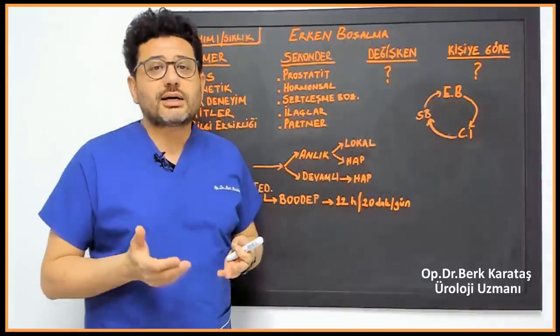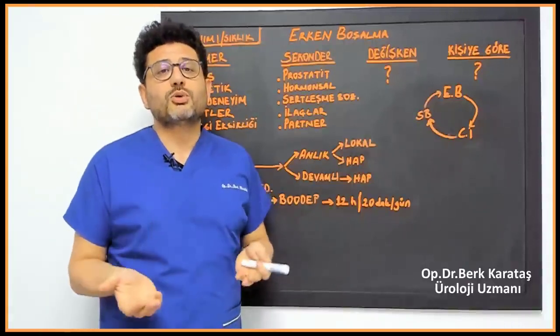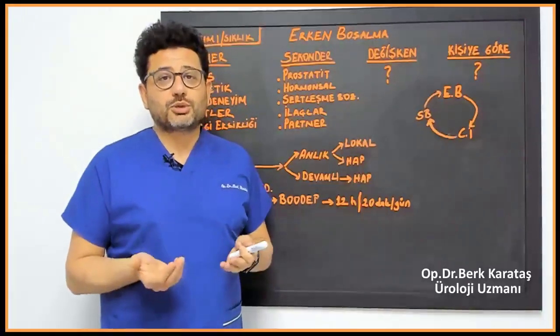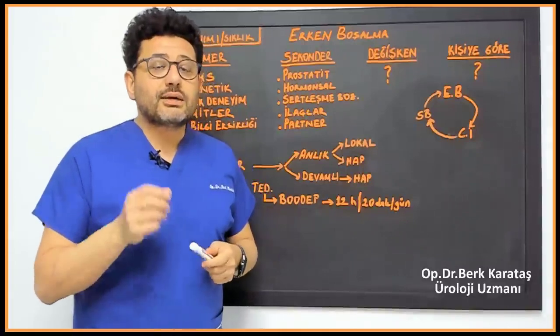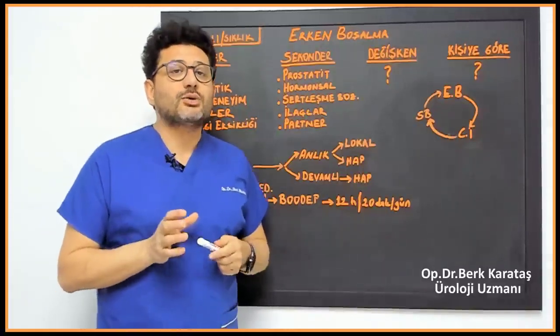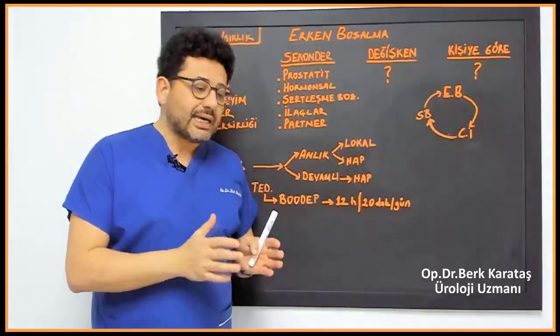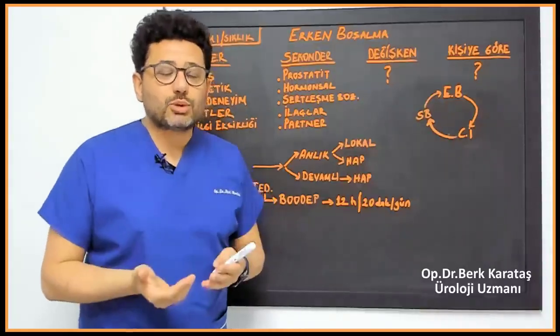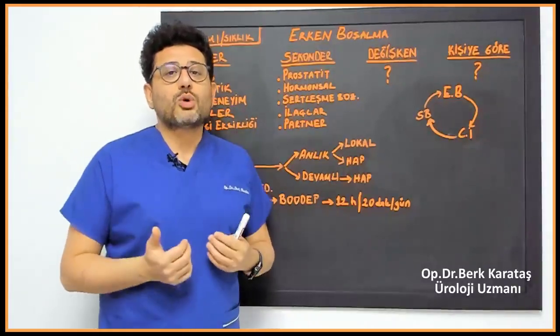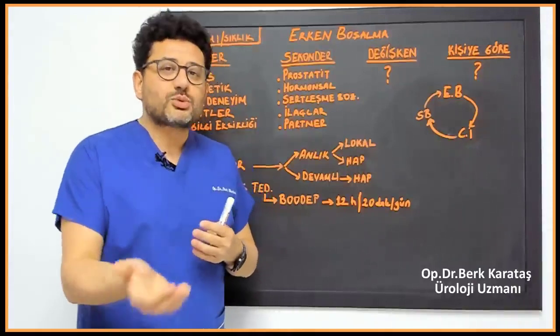Let me give you an example of premature ejaculation according to the person. The person says we go to work with my wife for 20 minutes. I ejaculate, but my partner can't orgasm. He says I ejaculate prematurely. Of course, medically, when the duration is 5-6 minutes, if the man does not ejaculate prematurely within these 5-6 minutes,